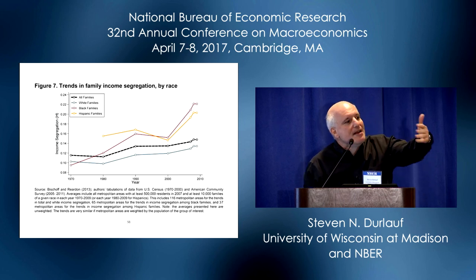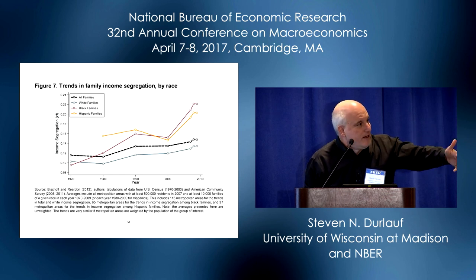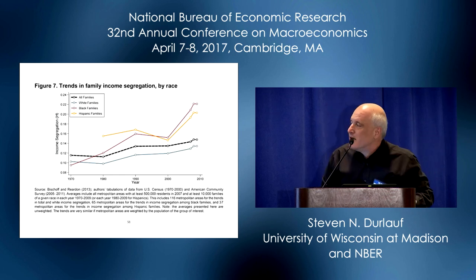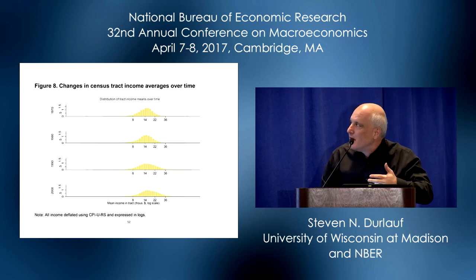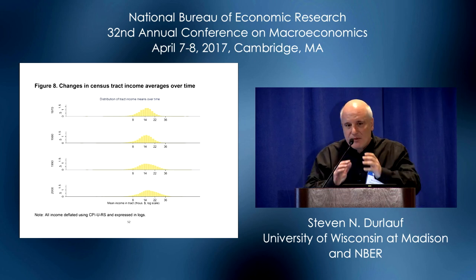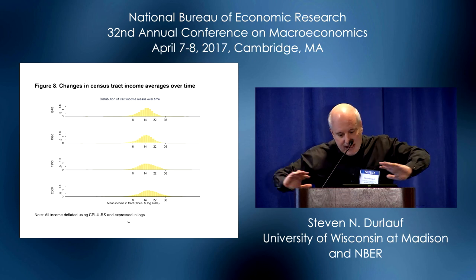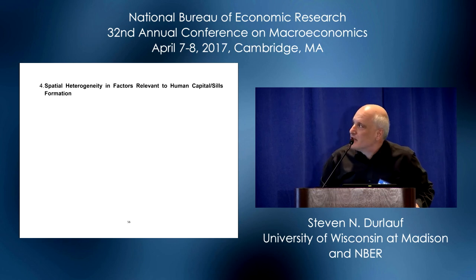Of particular interest is work by Sean Reardon at Stanford, who has looked at the dynamics of income segregation across neighborhoods and finds that income segregation is increasing in the United States over the last several decades, even though racial segregation is decreasing. When we look at census tract income measures over time, we again see this increase in the variance across neighborhoods, and we see similar things at the state level.